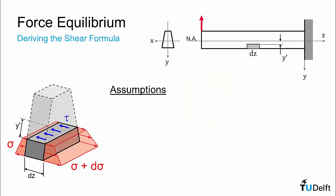The first major assumption is that the flexure formula describes a normal stress distribution in our beam. Basically, this means that all the assumptions that we used for the flexure formula in the previous unit must also apply here, so that plane sections remain plain and the individual lines along the beam will curve in the nature that we saw in the previous unit.